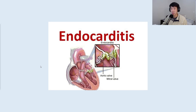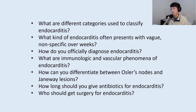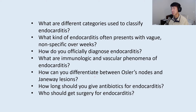The one they asked me to make was on endocarditis, so it's going to be a really brief overview. A couple of things I want to go over are some pimp questions you might get: What are the different categories used to classify endocarditis? What kind of endocarditis presents with vague non-specific symptoms over weeks? How do you officially diagnose endocarditis? What are the immunologic and vascular phenomena? How do you differentiate Osler's nodes from Janeway lesions? How long should you give antibiotics? And what are the indications for surgery?